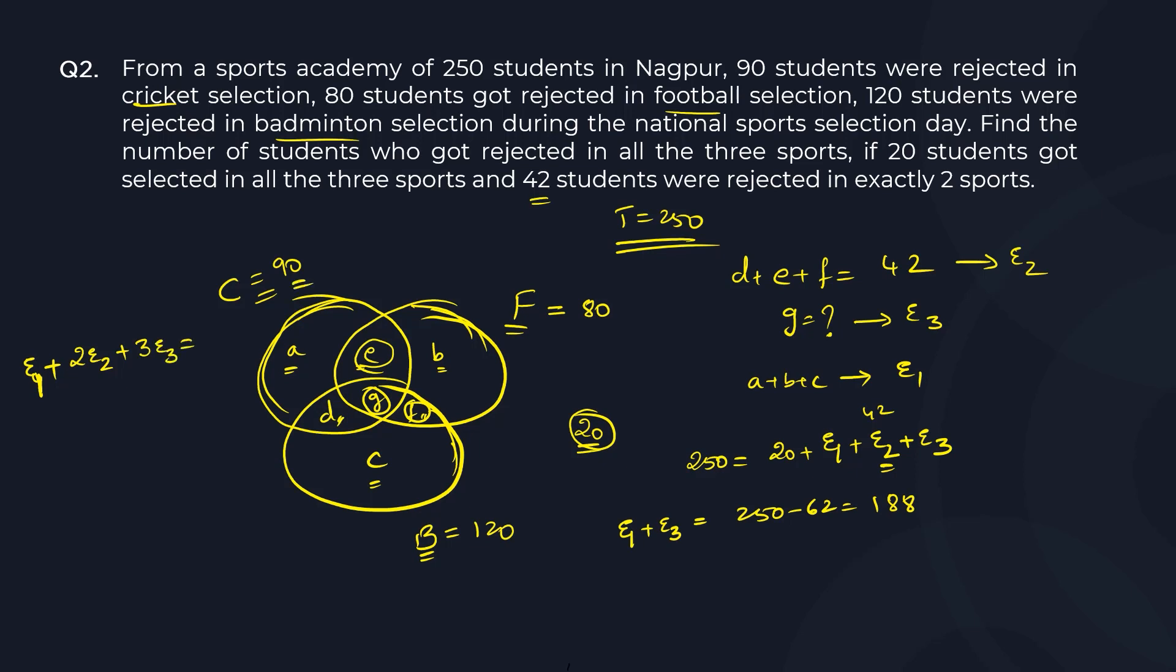So three times exactly three. This total is equal to 90 plus 80 plus 120. So 120 plus 80 is 200, 200 plus 90 is 290. So here again, we know exactly two is 42. So I will get from here exactly one plus three times exactly three is how much? 290 minus 84, so this will be 206.